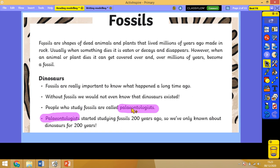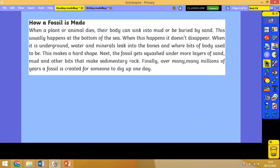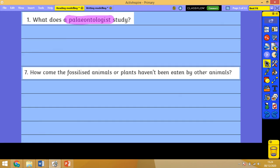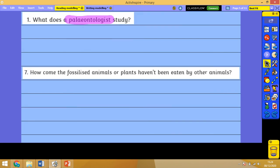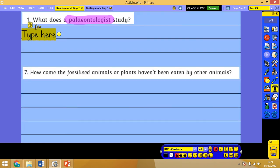And it's also down here as well, so I'm going to read both of these sentences. People who study fossils are called paleontologists. Paleontologists started studying fossils 200 years ago, so we've only known about dinosaurs for 200 years. Let me go back and double check my question. What does a paleontologist study? It gives me my answer quite clearly there. A paleontologist studies fossils. So I'll write that as a full sentence. I'm on a touchpad mouse so I'm only going to type it.